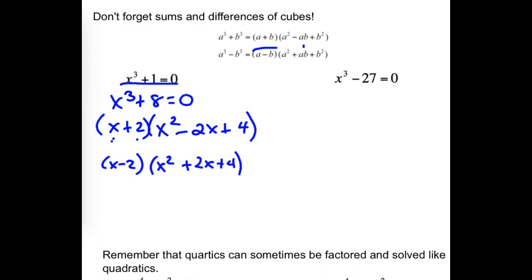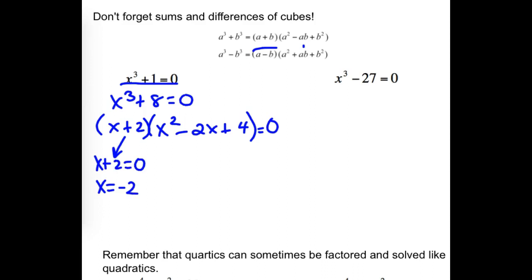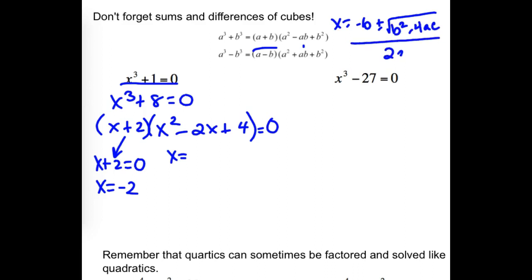Now we have this equal to 0, so we're not just factoring — we're actually solving. The binomial piece is easy to solve: x plus 2 equals 0, so x has to be negative 2. But the trinomial part — x squared minus 2x plus 4 — you're going to have to use the quadratic formula. The quadratic formula: x equals negative b plus or minus the square root of b squared minus 4ac, all divided by 2a. That's another formula you're expected to know.